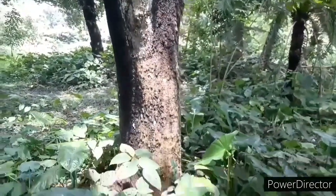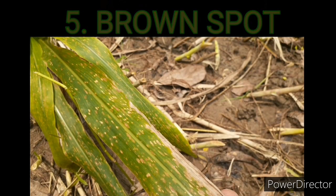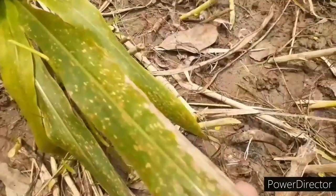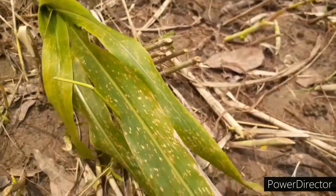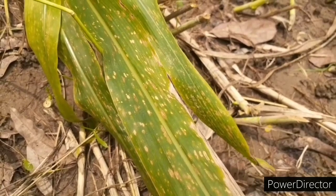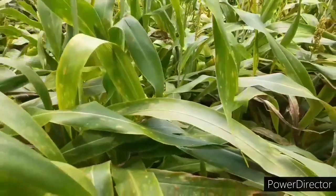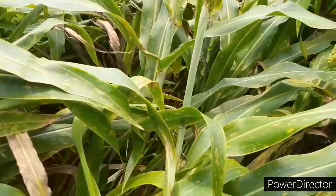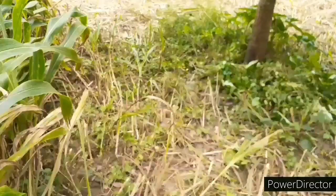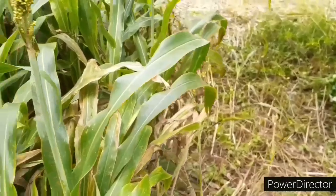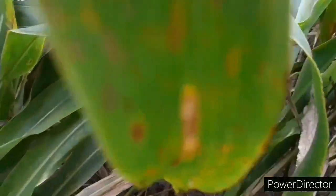The fifth kind of disease is brown spot. In this type of disease, the leaves of the maize plant get light green color, water-soaked lesions which later turn to brown or dark brown patches on the lower side of the leaves. These types of diseases can be stopped by crop rotation, field sanitation, and growing resistant varieties of maize plant.